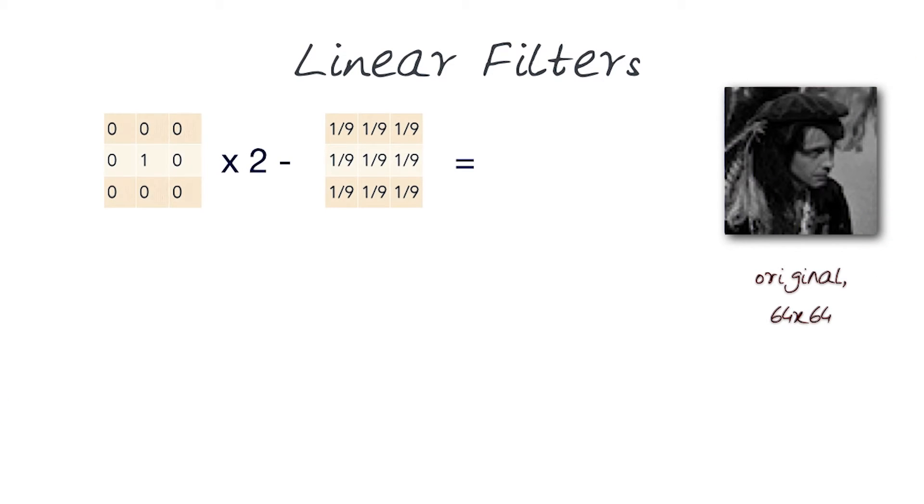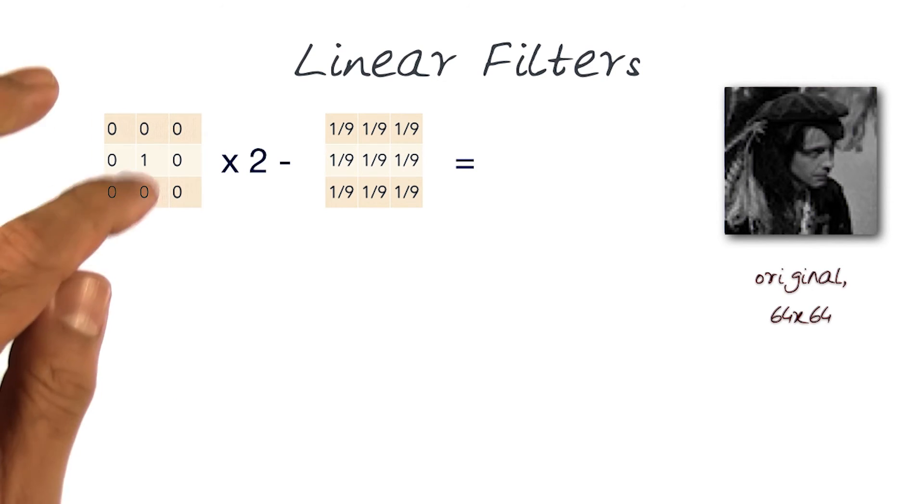Again, my original image. And this time around, I have two different kernels. I want to take this kernel multiplied by two, which basically is one. Now basically saying is that I'm going to try to give it a little bit more strength at the value itself.